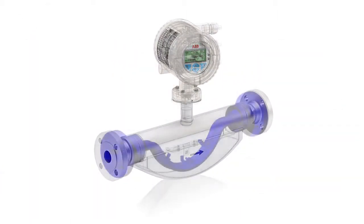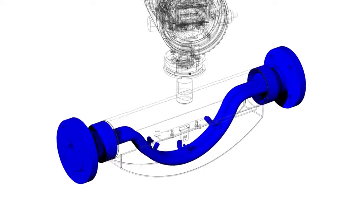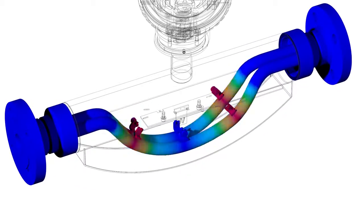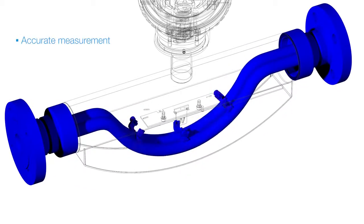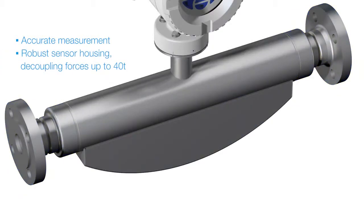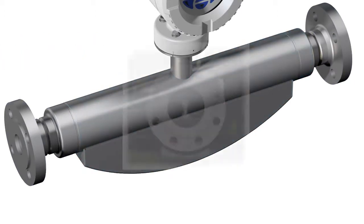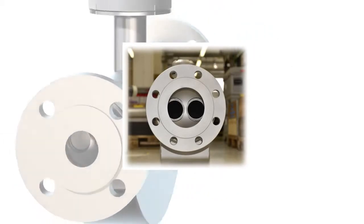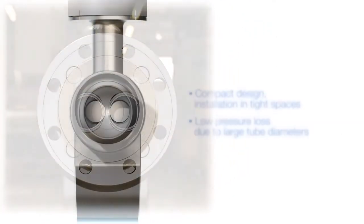The key elements of the ABB Coriolis Master are oscillating tubes. Mass flow creates a phase shift of the oscillation. A very robust sensor housing protects the vibrating tubes and eliminates interferences from outside. Larger tube design produces a lower pressure drop.